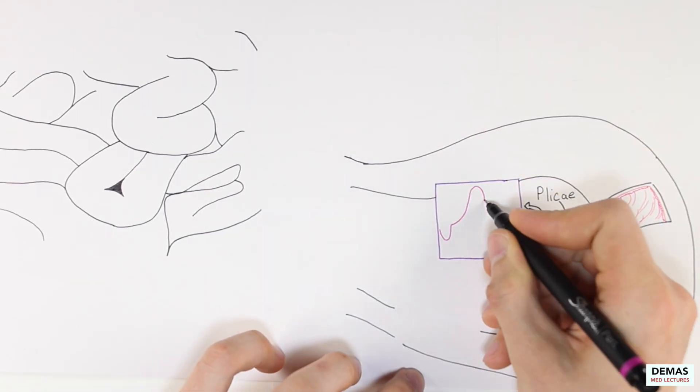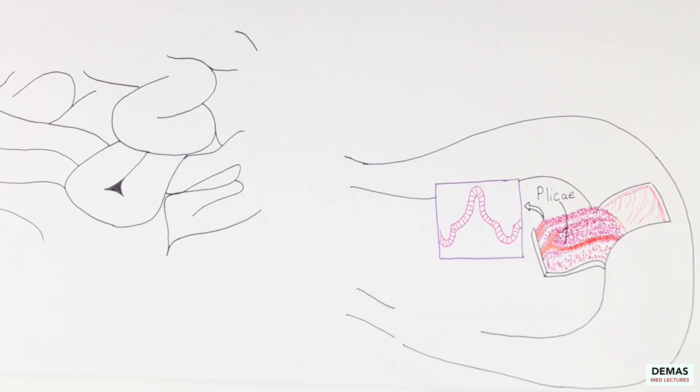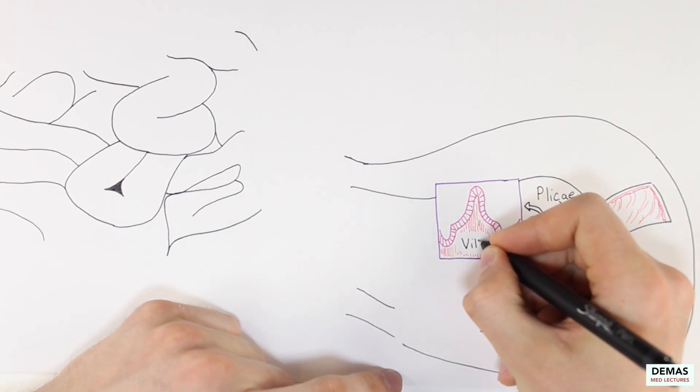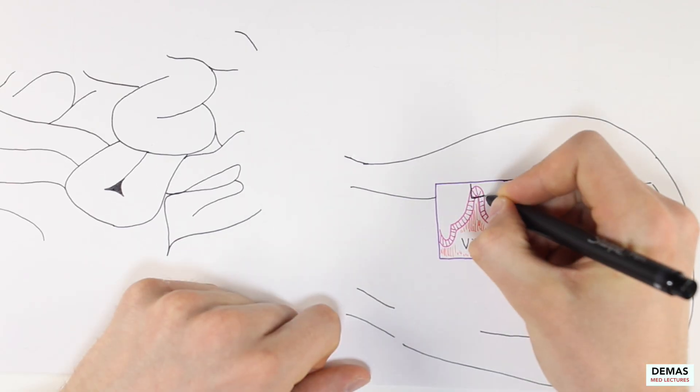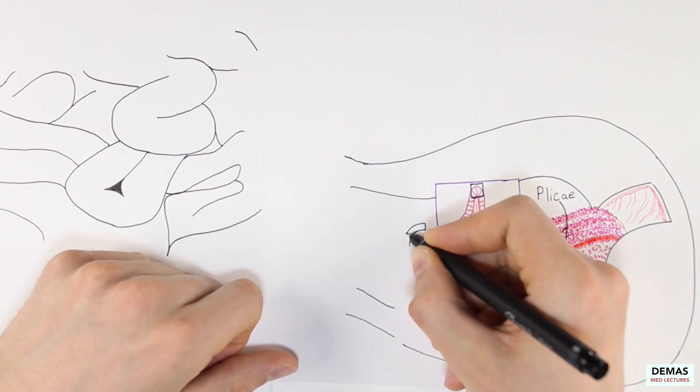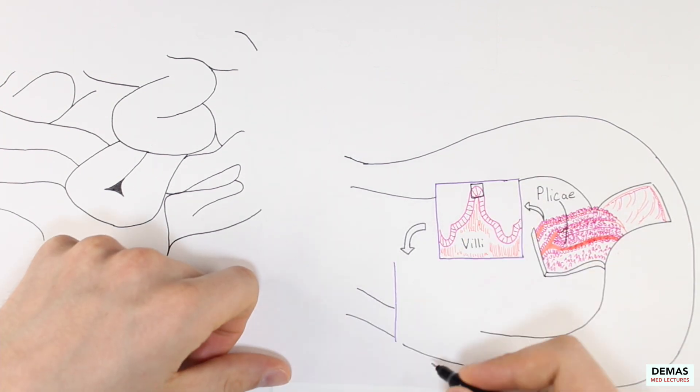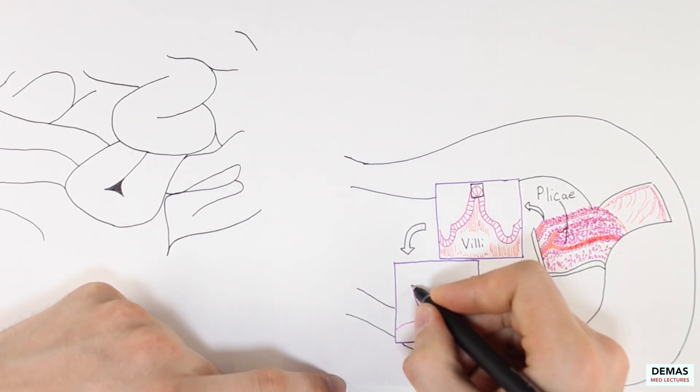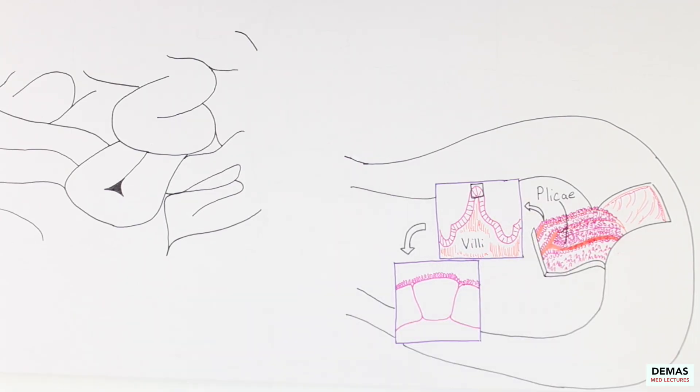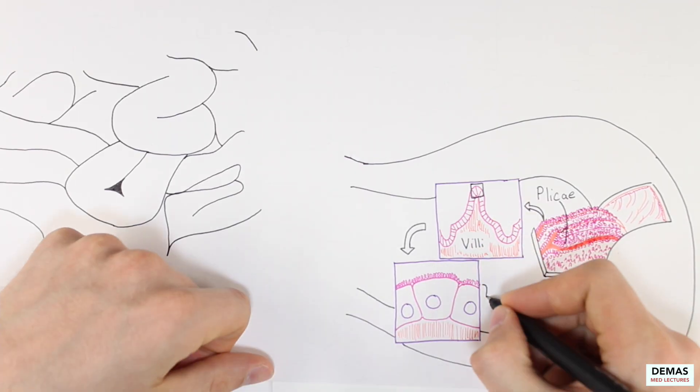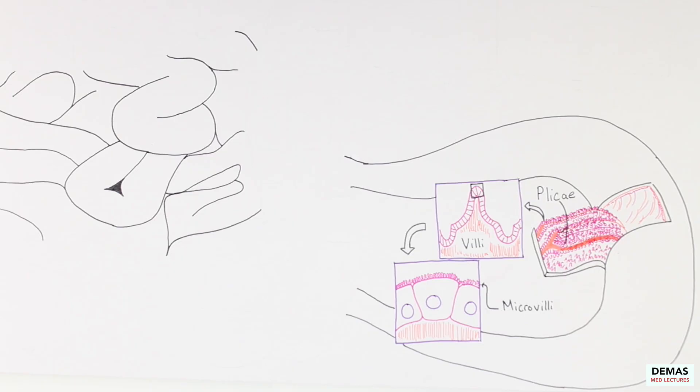Next, each plicae has a number of protrusions on its surface called villi that can help to further increase the surface area. Let's zoom in on one of these villi. On the outside of the villi are mucosal epithelial cells known as enterocytes. These enterocytes have very fine microvilli that we call the brush border and can be visualized on light microscopy.